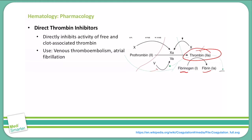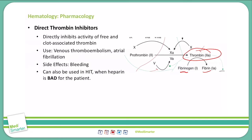The adverse effects that we can see with direct thrombin inhibitors include bleeding — obviously, that is what it is intended to do, to keep clotting from happening. One great thing about the direct thrombin inhibitors is that they do not require any lab monitoring, whereas some other medications we will discuss do require monitoring lab values to make sure we are within a therapeutic range.